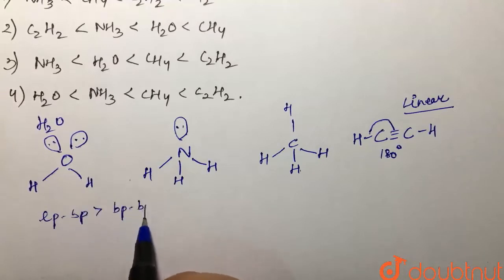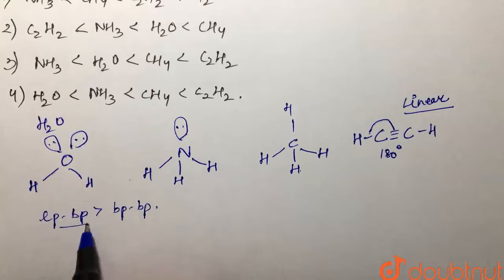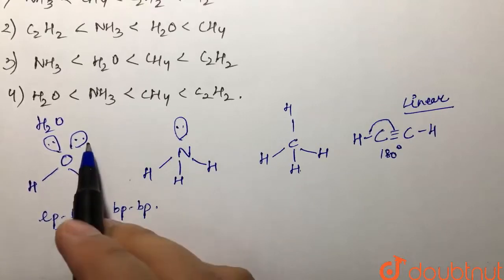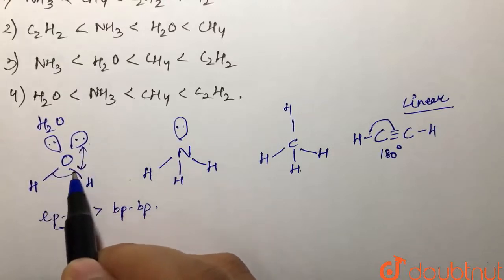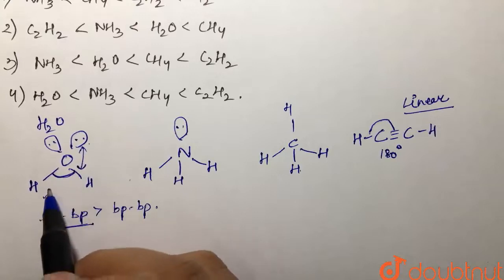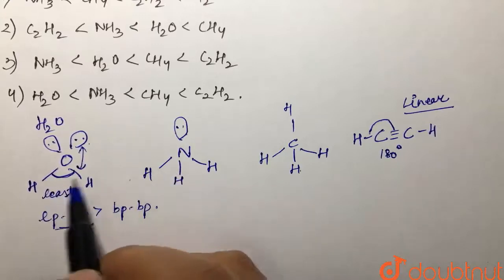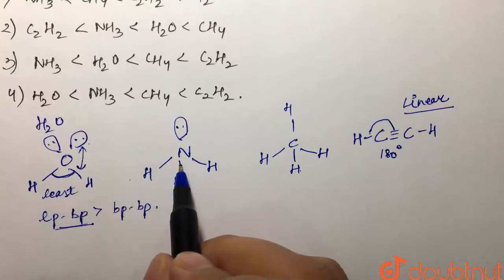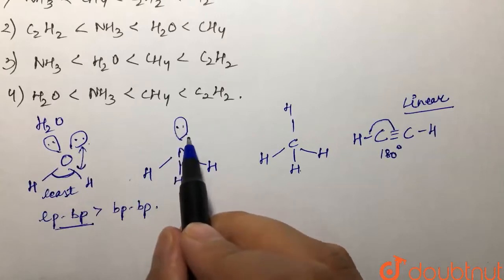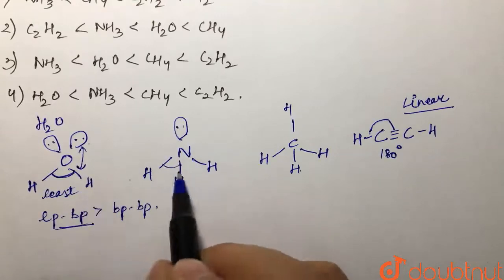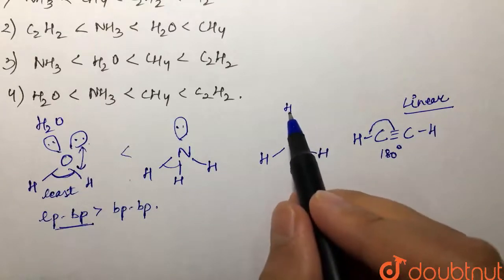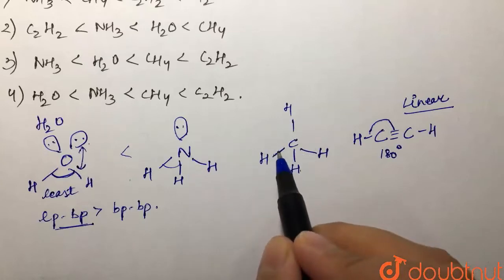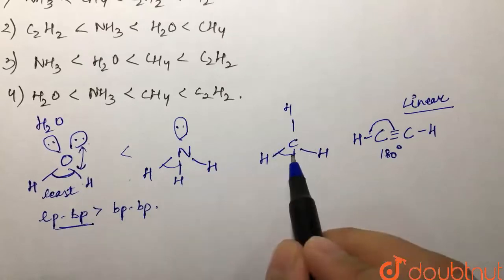Lone pair–bond pair repulsion is always greater than bond pair–bond pair repulsion. This repulsion is maximum where we have the most lone pairs — that is water. So due to this lone pair–bond pair repulsion, the bond angle in water is the least. Ammonia has slightly larger bond angle with one lone pair, and methane has the maximum bond angle among these three with no lone pairs.